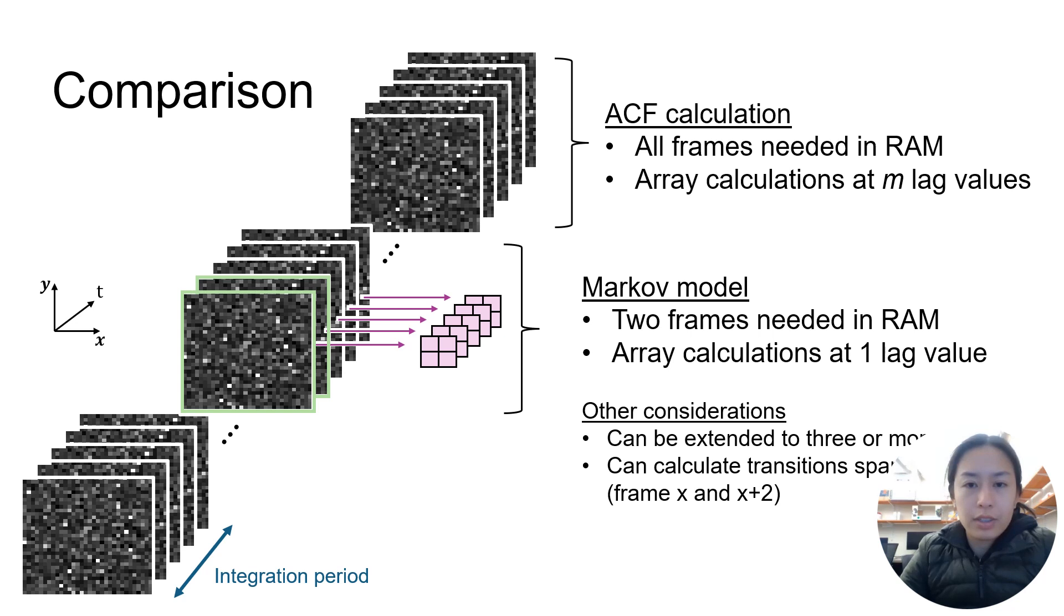A couple of other considerations: this method can be extended to three or more frames, although eigenvalue computation time significantly increases with matrix size. We can also calculate transitions spanning more than one frame, for example finding the difference between a frame and two frames behind, and we are investigating both of these avenues right now.